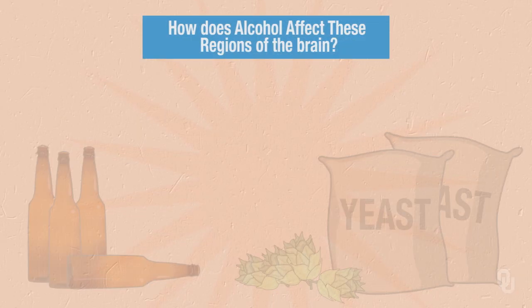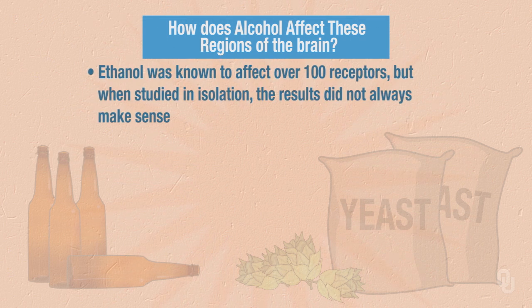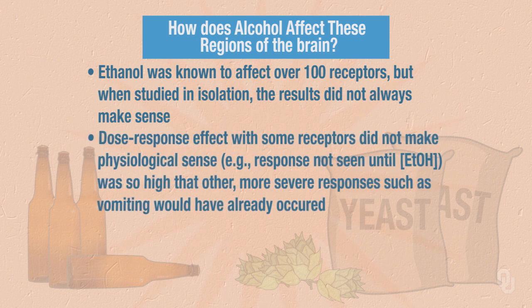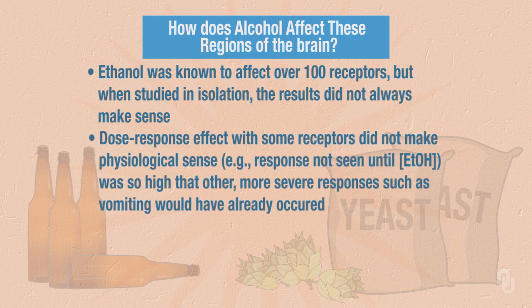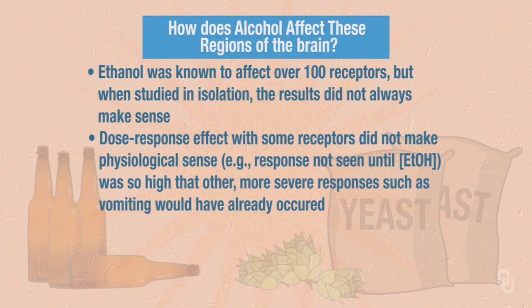We've discussed some of the various regions of the brain that are affected, but we haven't answered the question: how does alcohol affect these regions? Ethanol was known to affect over a hundred receptors, but when these were studied in isolation, the results did not always make sense. The dose-response effect with some receptors did not make physiological sense — the response was not seen until ethanol concentration was so high that other more severe responses, such as vomiting, would have already occurred.